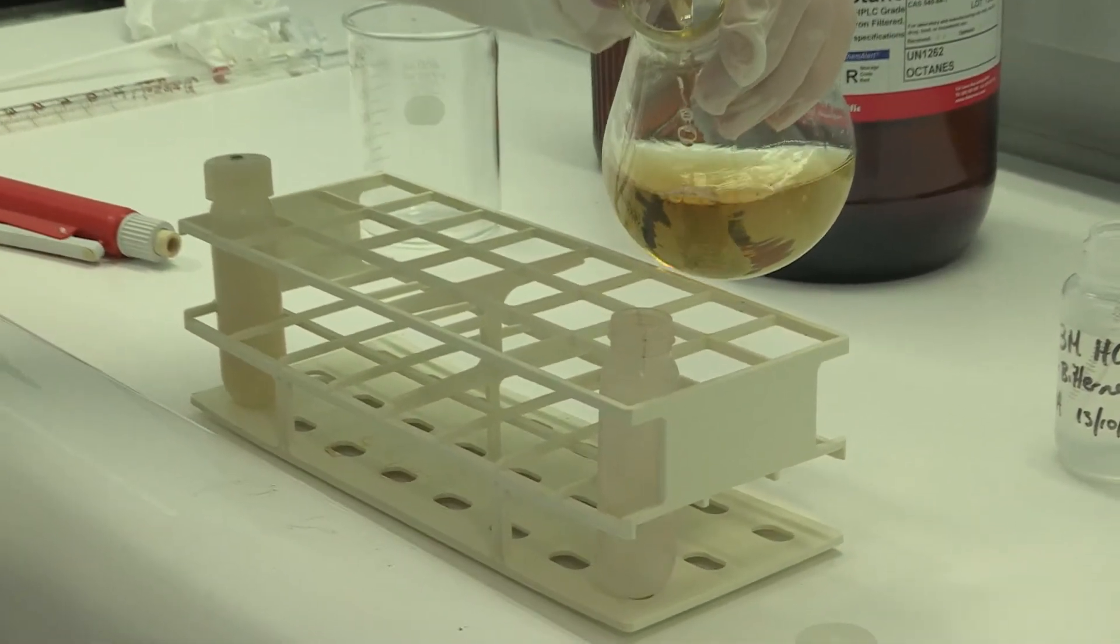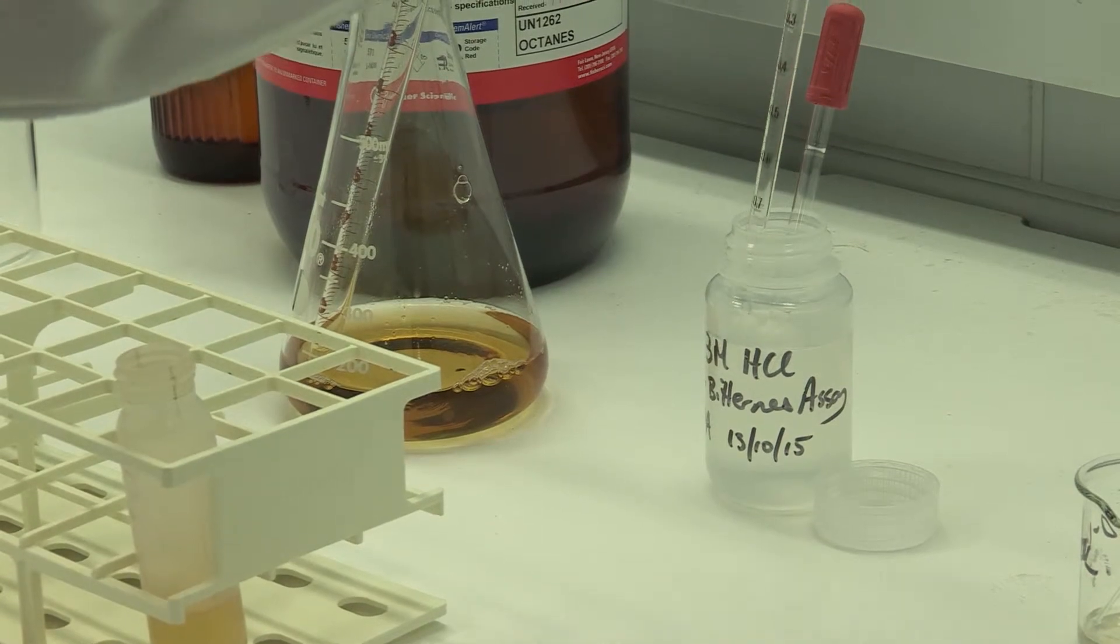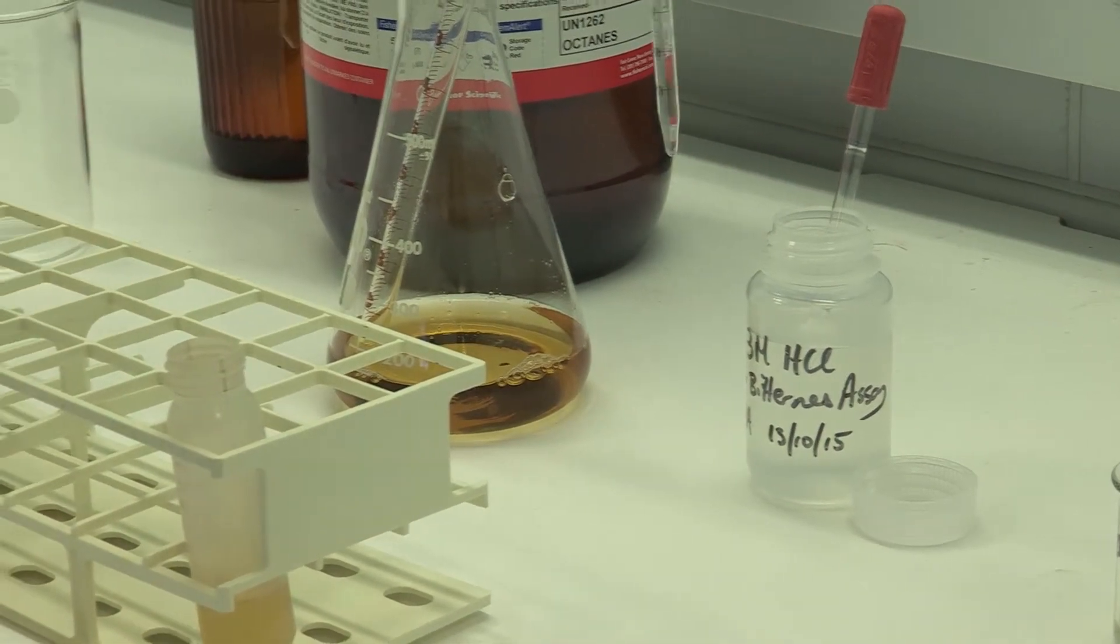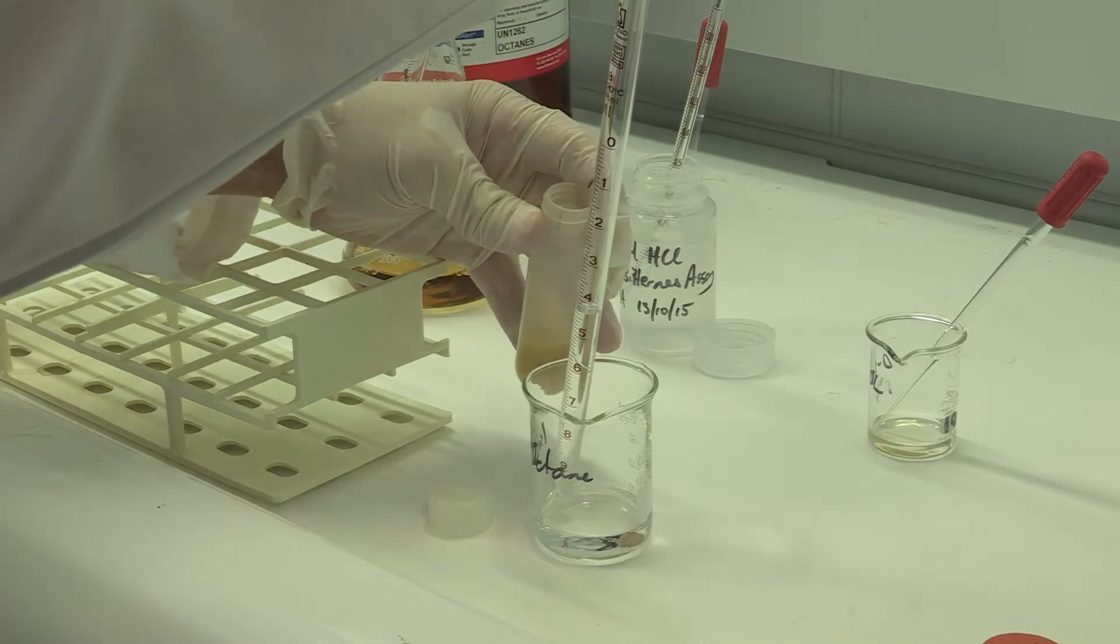For the analysis, a 10ml aliquot of beer is carefully added to a centrifuge tube. A small amount of HCl is added to acidify it, and some octanol may be added to reduce foaming.